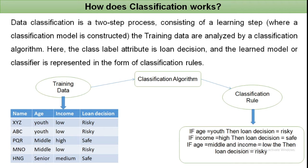The training data includes the name of a person, their age having three categories — youth, middle, and senior — and their income as low, high, or medium. According to these variables, we make the decision on whether the loan applicant is risky or safe for the bank.